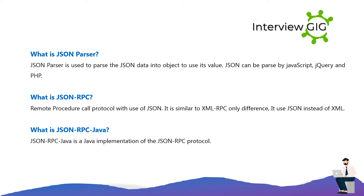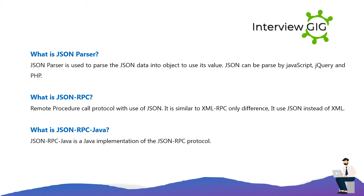What is a JSON parser? A JSON parser is used to parse JSON data into an object to use its values. JSON can be parsed by JavaScript, jQuery, and PHP. What is JSON-RPC? It is a remote procedure call protocol that uses JSON. It is similar to XML-RPC; the only difference is that it uses JSON instead of XML.